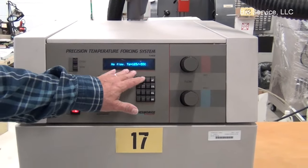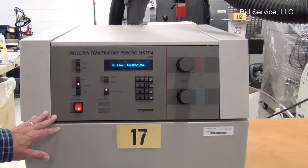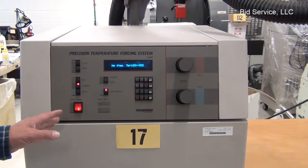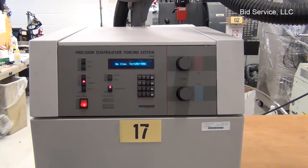And you can see it says no flow and the set points that are currently in the system. You can store up to ten different cycles into the memory if you want to.